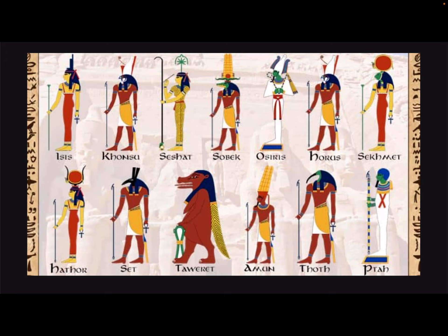For example, Osiris was god of the living, Anubis was god of death, Ra was god of the sun, and Geb was god of the earth.